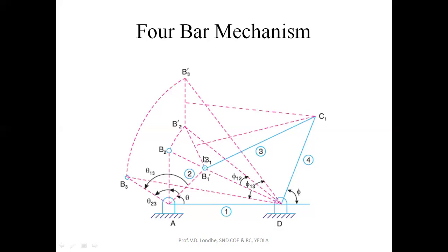B1 is the initial position. From B1 you have to join B1 to B2-dash, and then from B2-dash to B3-dash. So first join B1 to B2-dash, then B2-dash to B3-dash. After joining these two lines, we have to draw the perpendicular bisector to B2-dash B3-dash and also to B1 B2-dash.